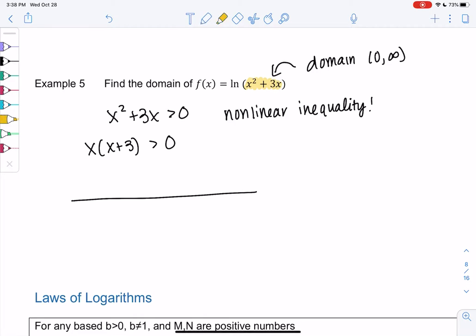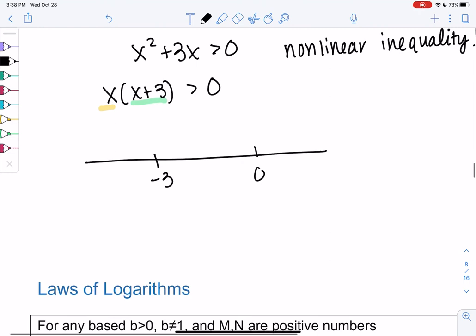So we get 0 and we get negative 3 on the number line. And then we're going to do those test intervals. So we'll plug into x, we'll plug into x plus 3, and then we'll plug into x times x plus 3. We did this really early in the semester. Hopefully it's coming back to you.